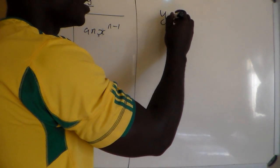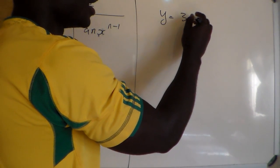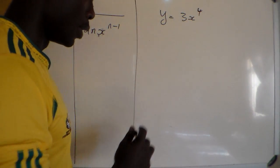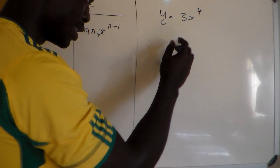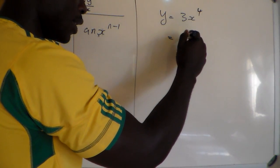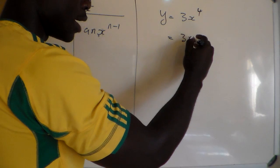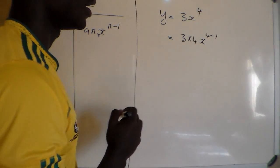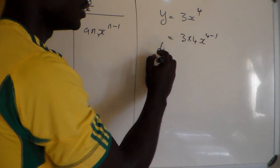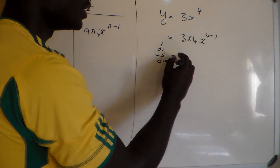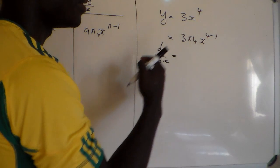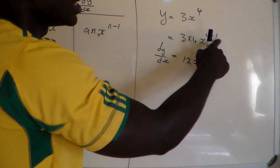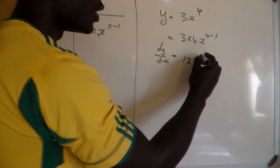Let's say we have to derive y equals 3x to the power 4. The derivative dy/dx is found by multiplying 3 by 4, giving 12, then x to the power 4 minus 1, which equals x to the power 3. So dy/dx equals 12x to the power 3.